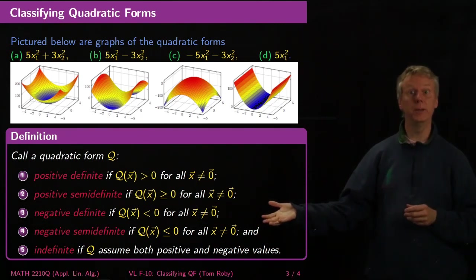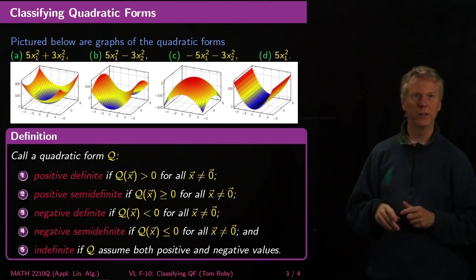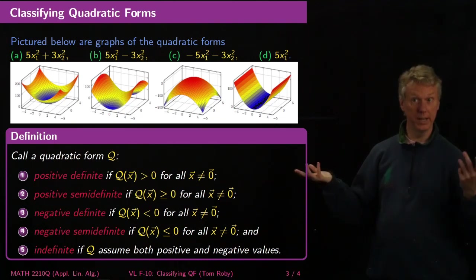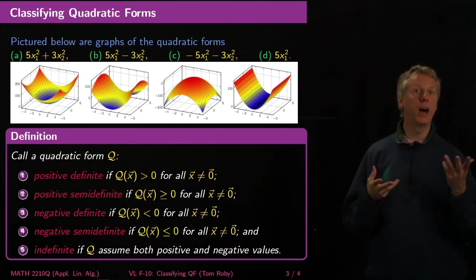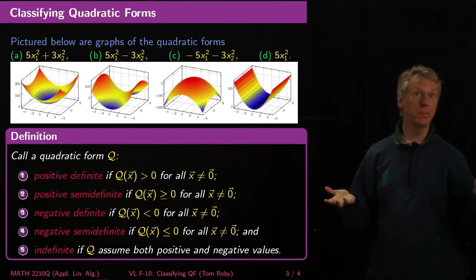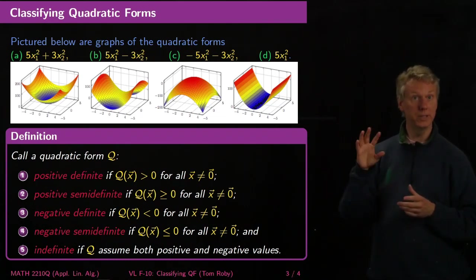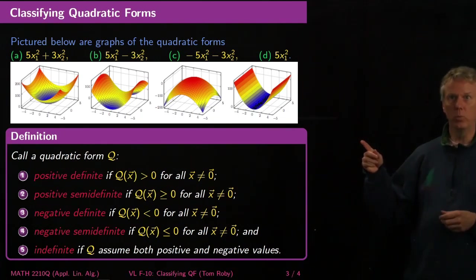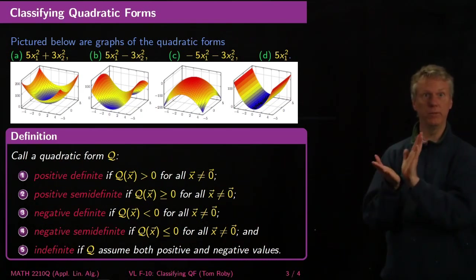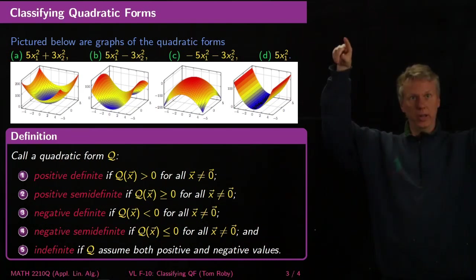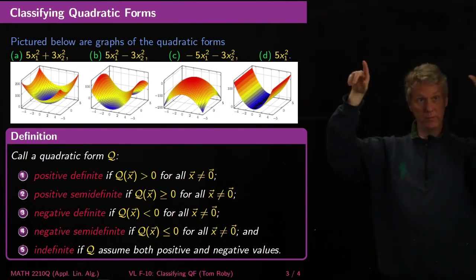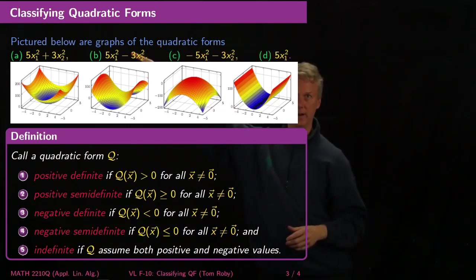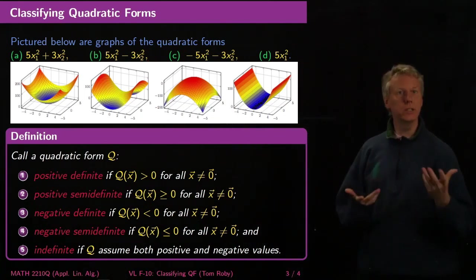Similarly we have negative definite and negative semi-definite. Those are just the flip side. And then finally, one of these pictures is indefinite. Depending on what values of x1 and x2 you plug in, you might get positive or negative values. That second one looks kind of like a saddle. If you make x1 bigger, you'll have something that's positive, and if you make x2 bigger, you'll get something that's negative. That's 5x1 minus 3x2 over here.